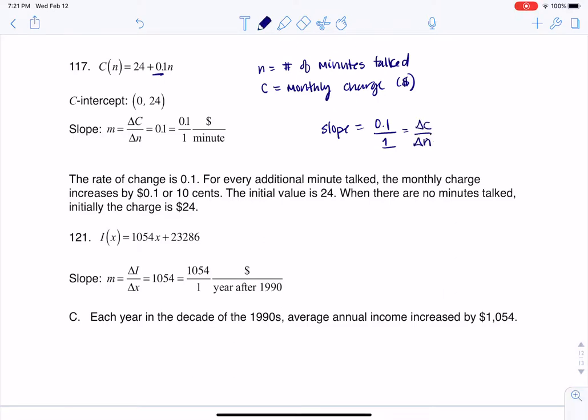But really if we look at it as units, it's going to be dollars per minute, and that's the interpretation of the slope. For every additional minute you talk, your monthly charge goes up by 0.1 dollars, and 0.1 dollars is 10 cents, so that's what I'm doing. I've interpreted my slope.